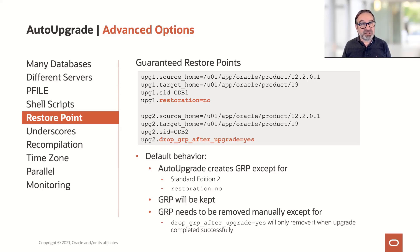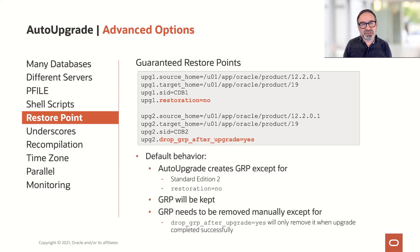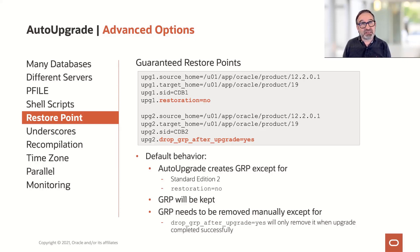By default, the guaranteed restore point will be kept. So when you upgrade afterwards, auto-upgrade tells you the name of the guaranteed restore point and you have to remove it manually. I had customers asking: I tested the upgrade 20 times and I do the production upgrade in a night from Saturday to Sunday, but I don't want to log into the system at 2 a.m. just to remove the guaranteed restore point. How can I remove it automatically once the upgrade is successful? You use the parameter drop_GRP_after_upgrade set to yes. Then once the upgrade is completed successfully, auto-upgrade will remove the guaranteed restore point.